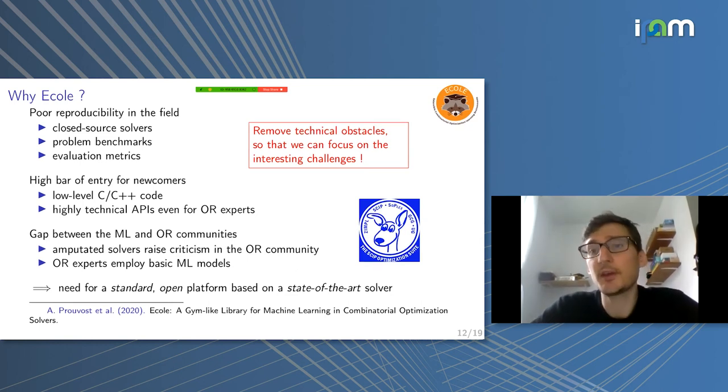Ecole aims for that, and it uses the open-source SCIP solver, which, as was said previously today, is basically the most competitive open-source solver out there. And it's really state-of-the-art, you have everything in SCIP, you have cuts, you have branching rules, you have primal heuristics, you have all the things that modern solvers have, SCIP has it.